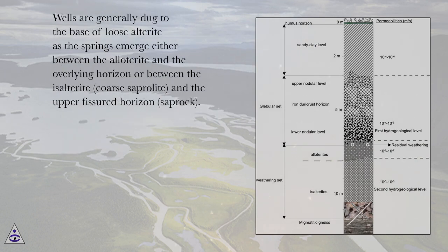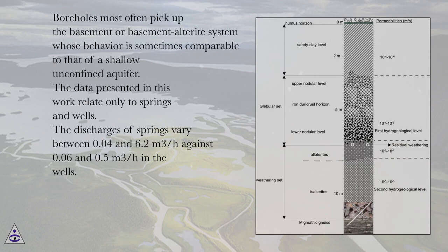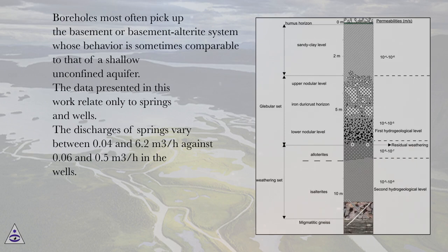Wells are generally dug to the base of loose alterite, while springs emerge either between the alterite and the overlying horizon, or between the fine alterite, coarse saprolite, and the upper fissured horizon, saprock. Boreholes most often tap the basement or basement-alterite system, whose behavior is sometimes comparable to that of a shallow unconfined aquifer. The discharges of springs vary between 0.04 and 6.2 m³/h, against 0.06 and 0.5 m³/h in the wells.